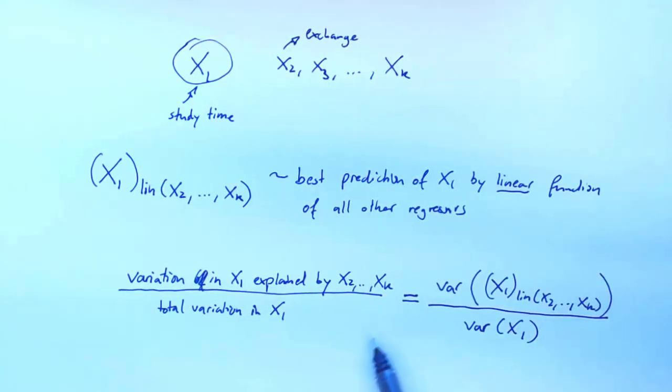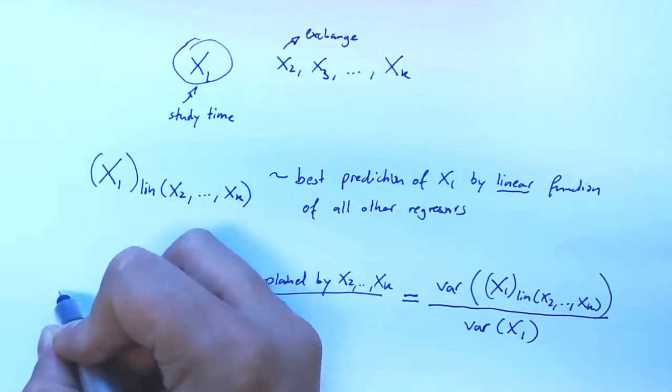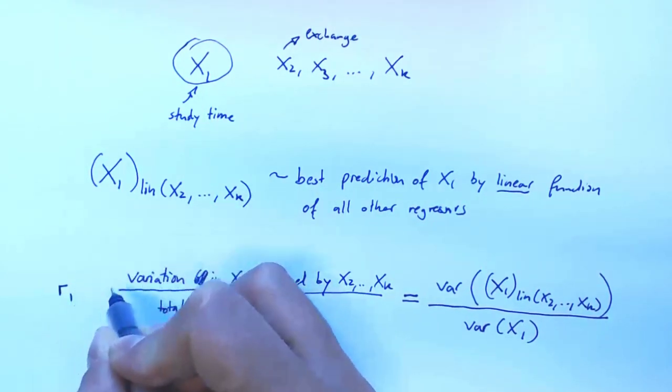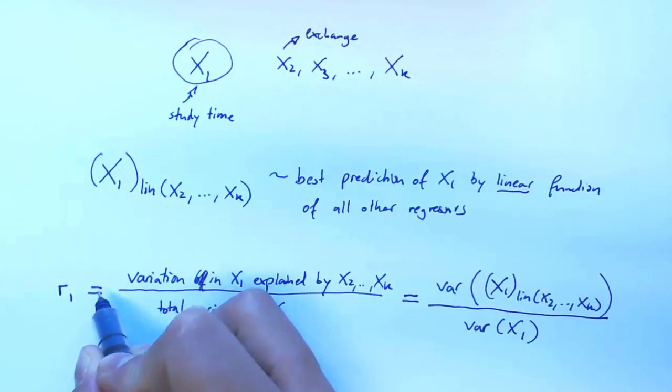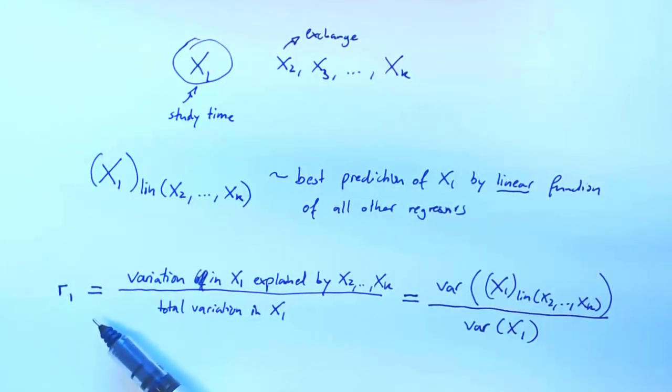So variance of X1, and this will be a value between 0 and 1. And for future reference, let's call this little r1. So if r1 is 0, then all the information in X1 is completely new. And if r1 is very close to 1, then almost all of the information provided by X1 is already contained in X2 through XK. So that would mean that there's a lot of co-movement between the regressors.